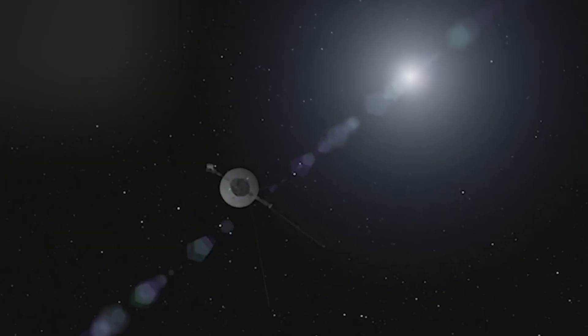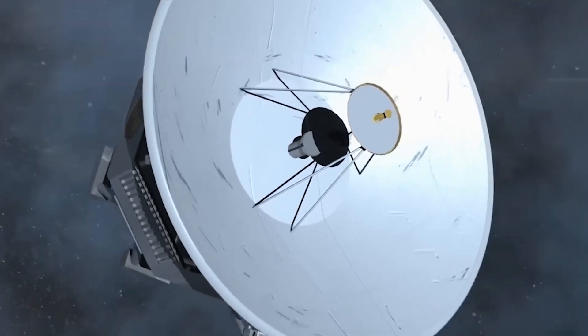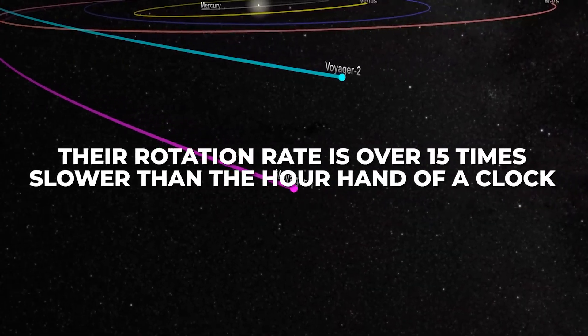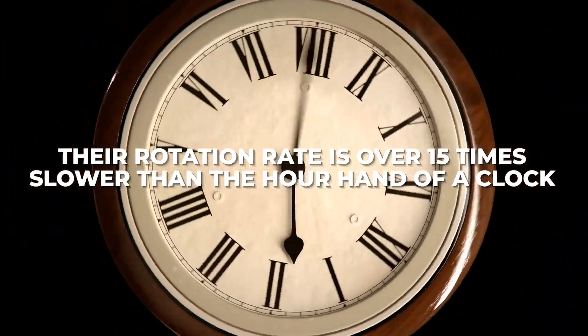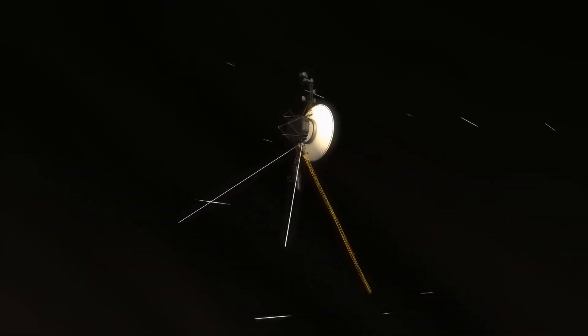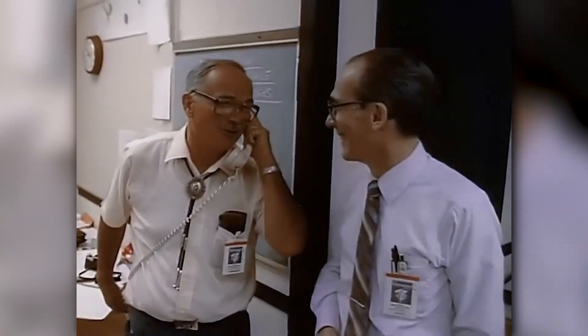Voyager 1 and Voyager 2 transcend the realm of ordinary spacecraft, meticulously designed as stable platforms. Their rotation rate is over 15 times slower than the hour hand of a clock. The spacecraft's ingenious design, crafted to minimize visual blur during its high-speed journey through space, showcased its impressive imaging capabilities.